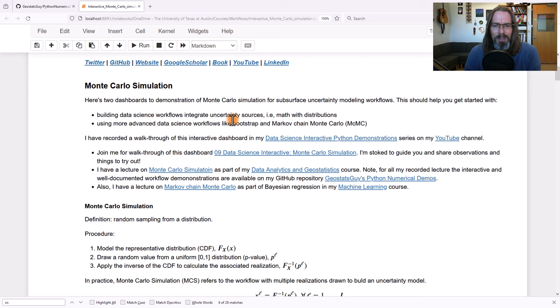What we can do with Monte Carlo simulation is we can build uncertainty modeling workflows. This is really powerful. We can incorporate integrate multiple uncertainty sources, basically do math with distributions. But also we can use Monte Carlo simulation to build more advanced data science workflows like Bootstrap, machine learning bagging, or Markov chain Monte Carlo simulation, which is required for a lot of Bayesian approaches where we sample the posterior. And there's many other applications for MCMC.